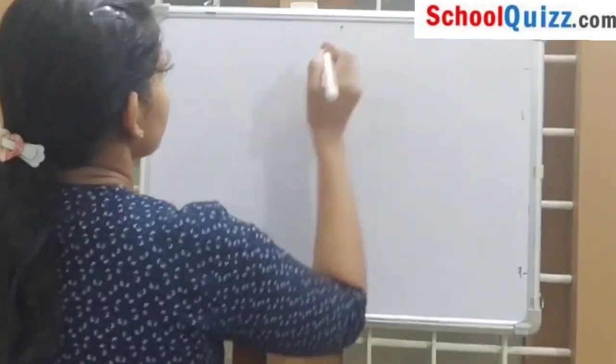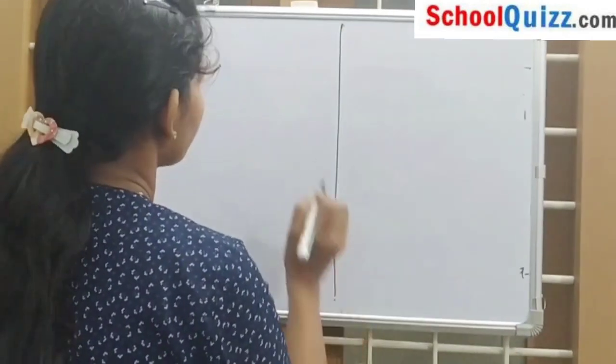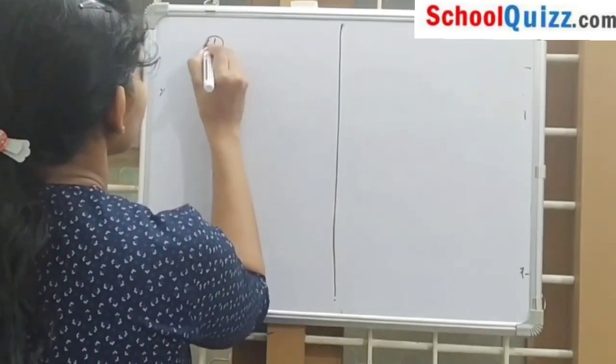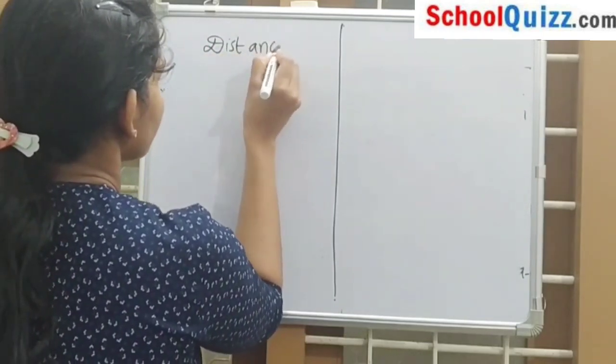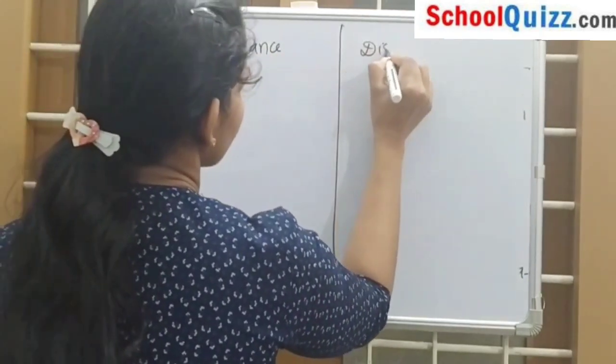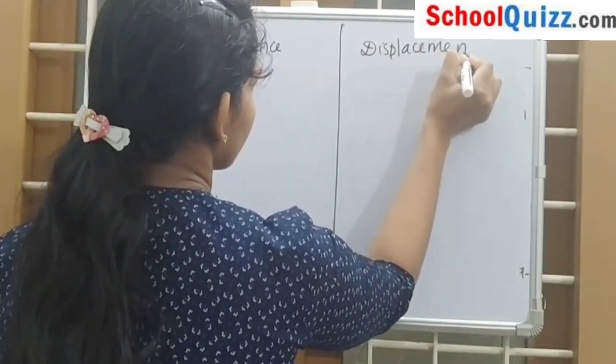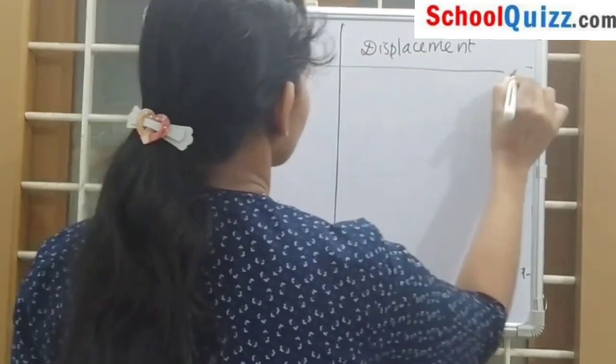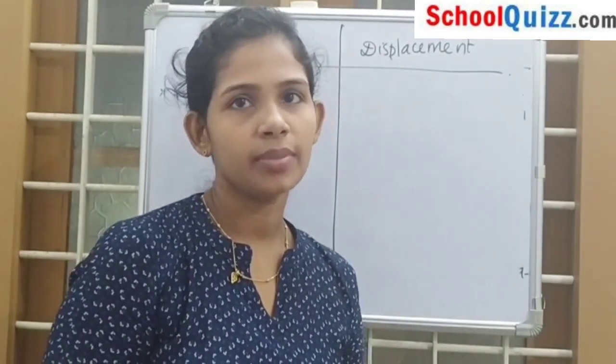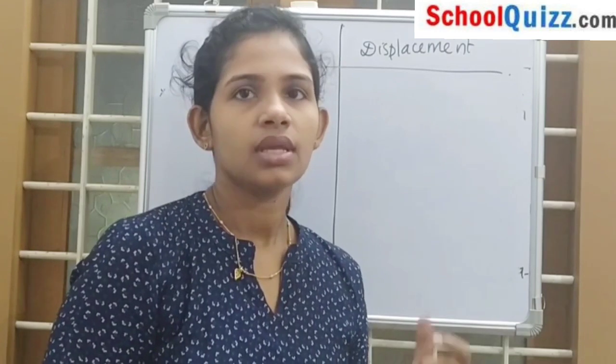We can sum up distance and displacement: distance is the total path covered by a body, and displacement is the shortest distance between the final and initial position.